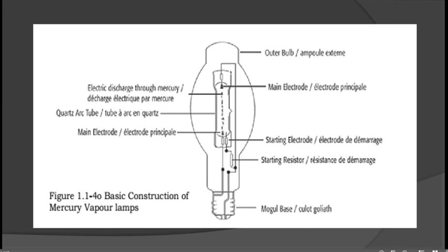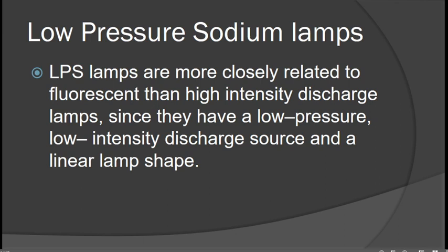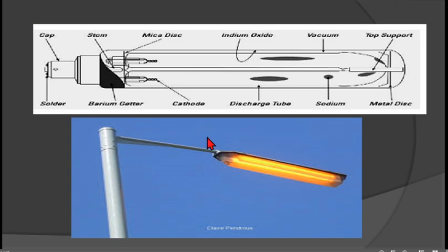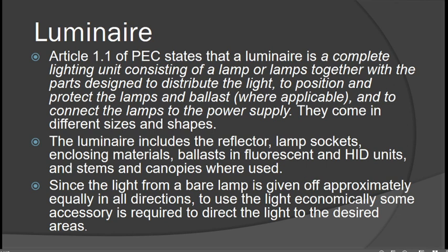The Low Pressure Sodium lamp, or LPS, is more closely related to fluorescent and high-density discharge lamps since it has a low-pressure, low-intensity discharge source and a linear lamp shape. LPS lamps are used on street lighting. A luminaire is a complete lighting unit consisting of a lamp or lamps together with parts designed to distribute, position, and protect the lamps — including the ballast where applicable — and to connect the lamps to the power supply. Luminaires come in different sizes and shapes and include reflectors, lamp sockets, enclosing materials, and ballasts.